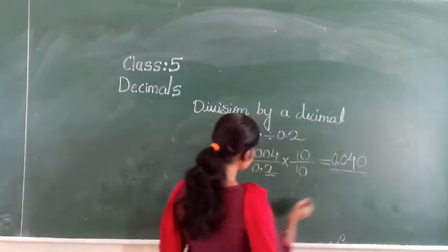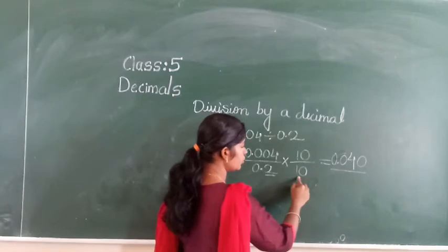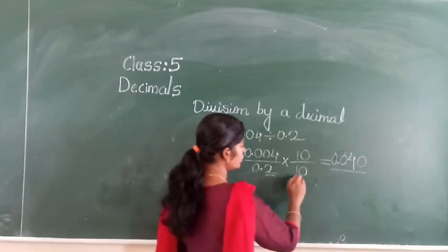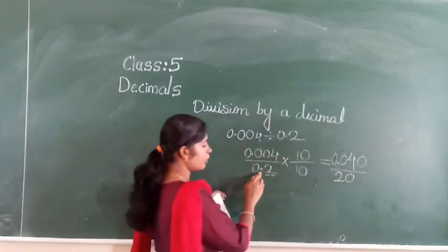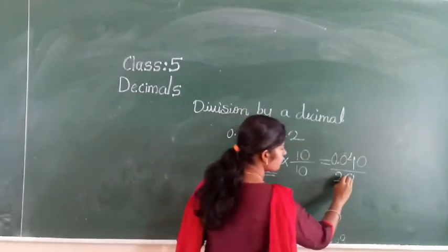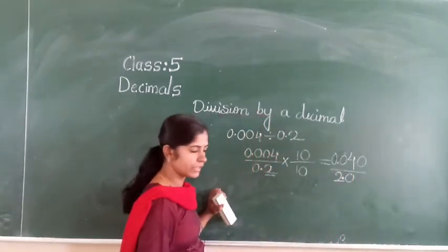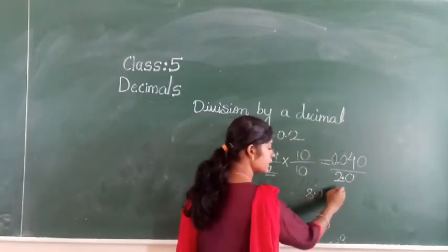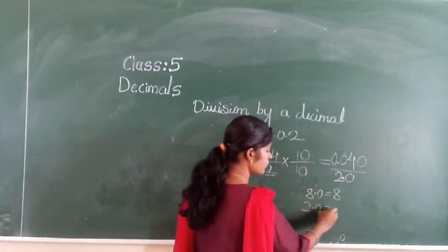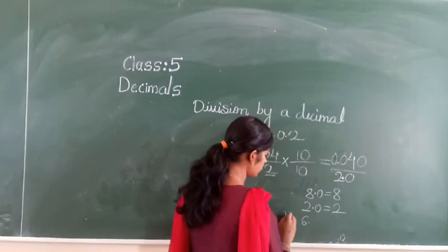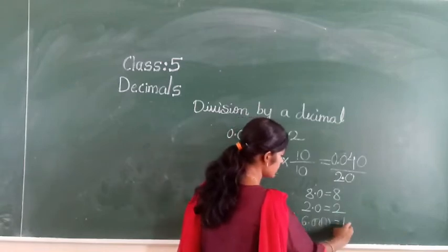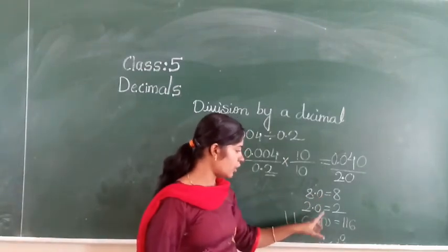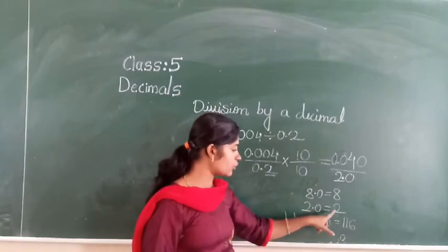Then 0.2 into 10: you assume only 2 is there, so 2 tens are 20. After how many digits is the point in 0.2? 1 digit, so the point comes here, making it 2.0. Now 8.0 means it is 8 only, and 2.0 means it is 2 only. If after the point there is a 0, it does not have any value. So 2.0 becomes 2.